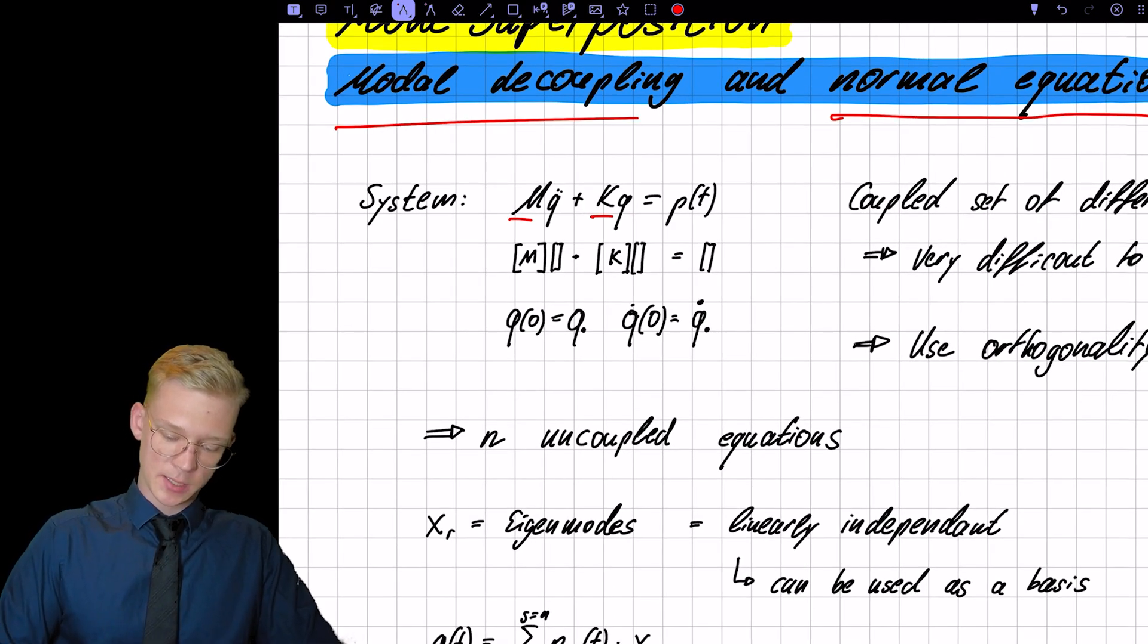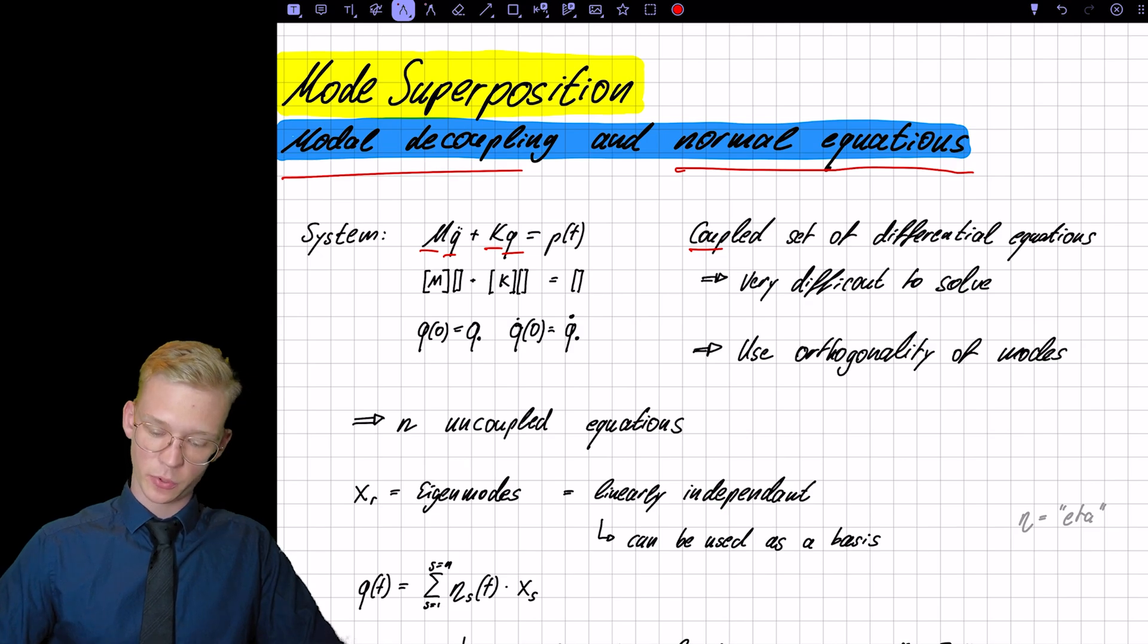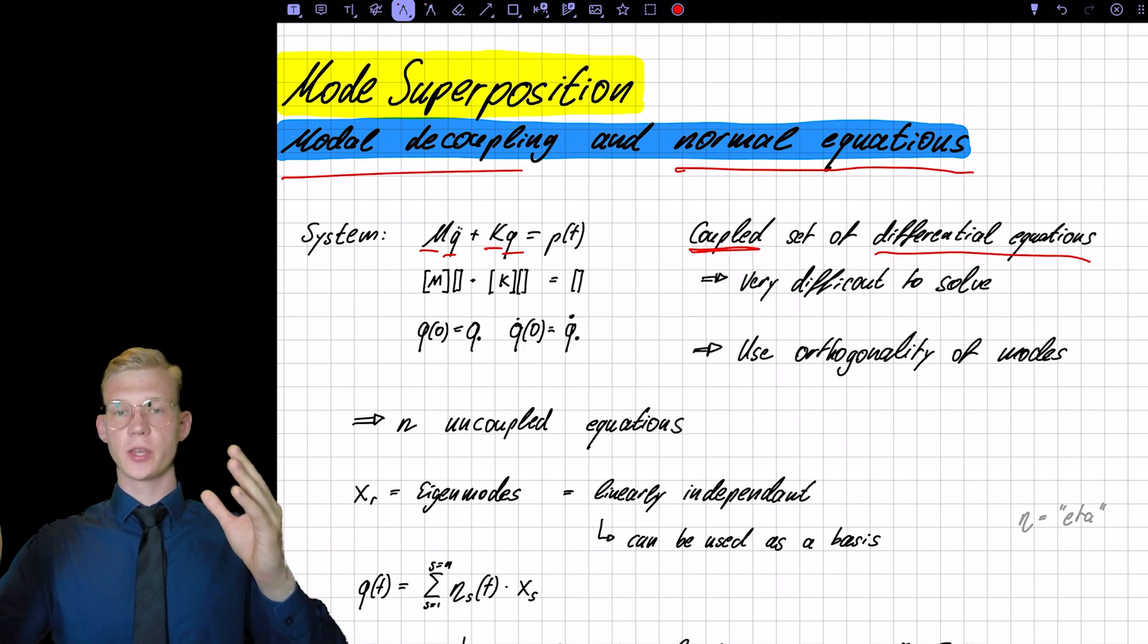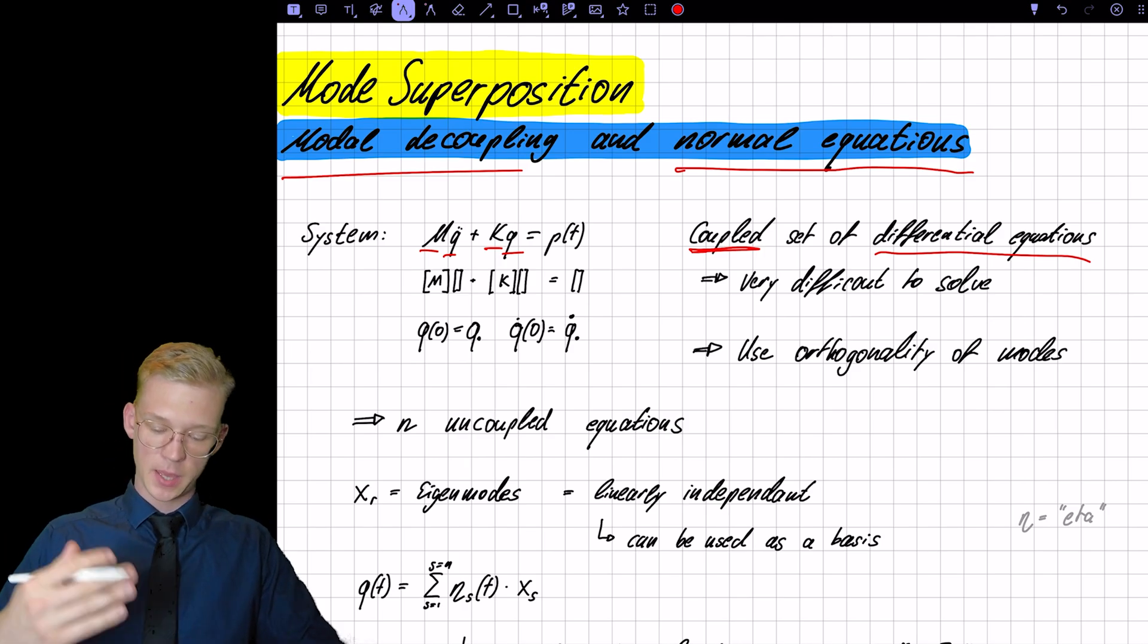So to solve that system, to solve for Q, we have a coupled set, this is the most important part, a coupled set of differential equations. So we can't solve one equation first and then the next one. We have to solve all of them together at the same time.